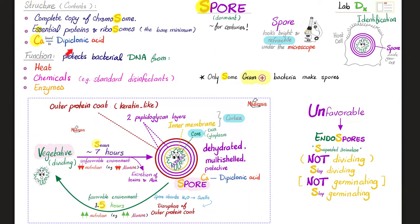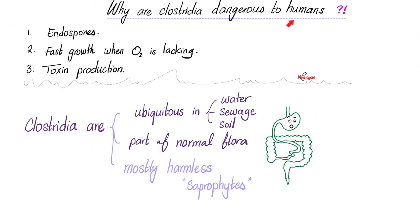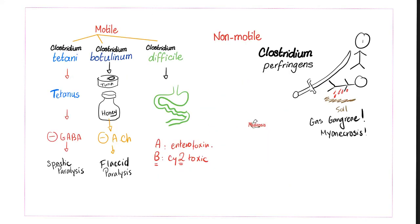What's a spore? Structurally, it is calcium dipicolinic acid, which surrounds and protects the bacteria from the surrounding environment. What's a Clostridium? It's a gram-positive bacteria, strictly anaerobic, can make spores, but cannot reduce sulfate to sulfite. Clostridium perfringens can make spores, they are anaerobic, and they can make toxins. They are everywhere around you, including in the soil — remember the soldier who got wounded and fell to the ground, and his wound got infected from the soil via Clostridium perfringens.